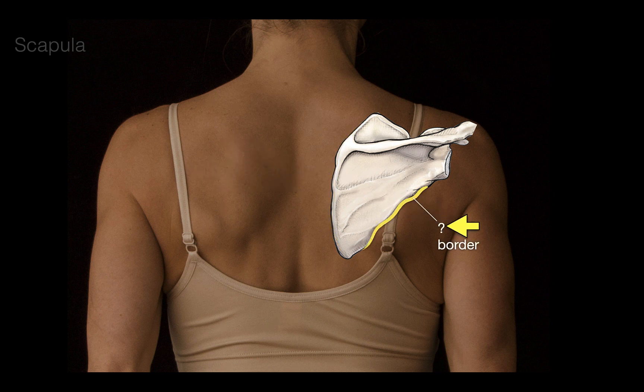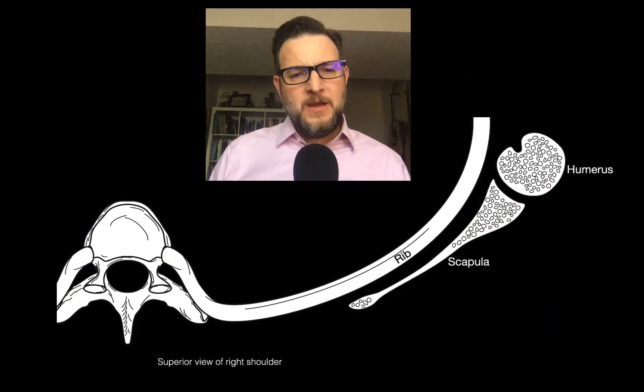What about this border? Well, it's on the lateral side of the bone, so let's call it the lateral border of the scapula. It's also the border that's close to your armpit, so we'll call it the axillary border as well.